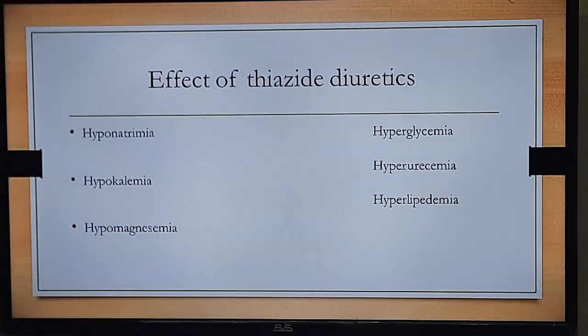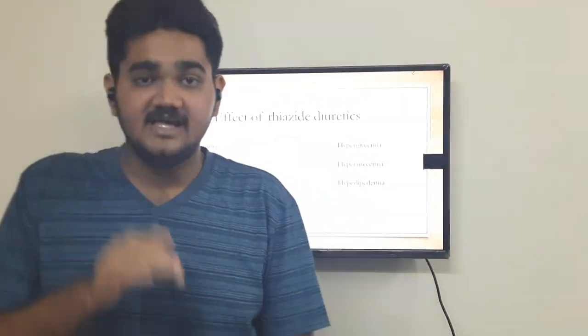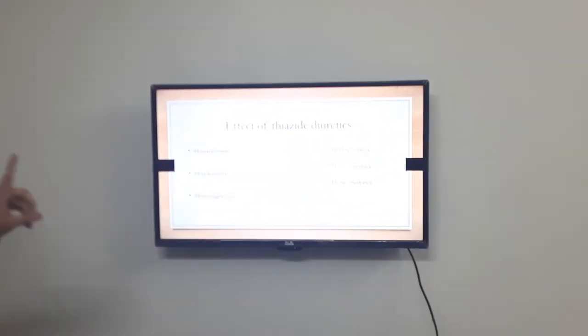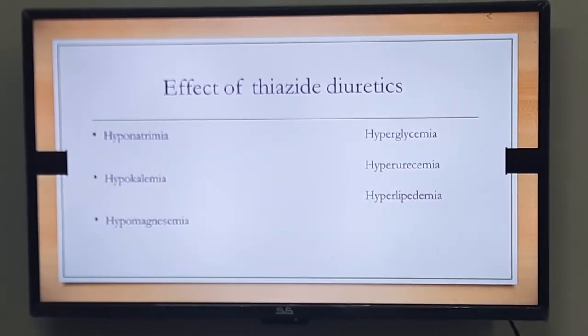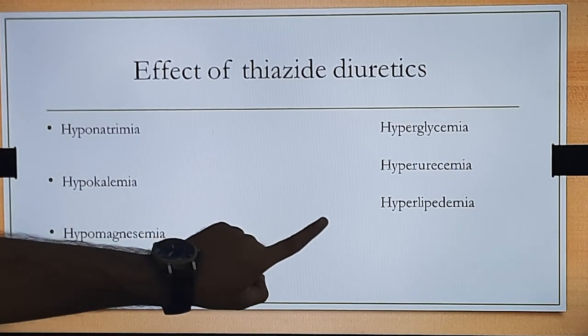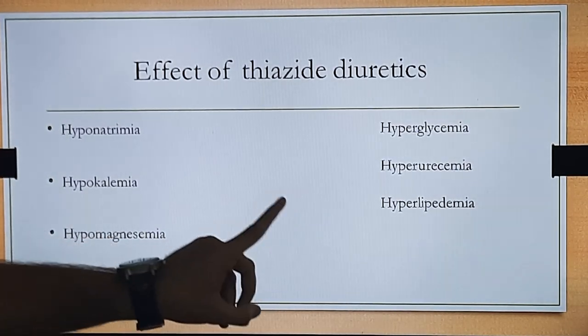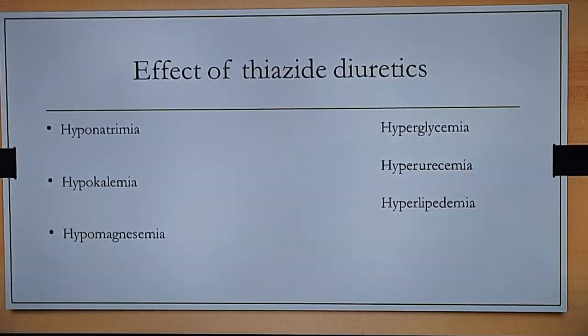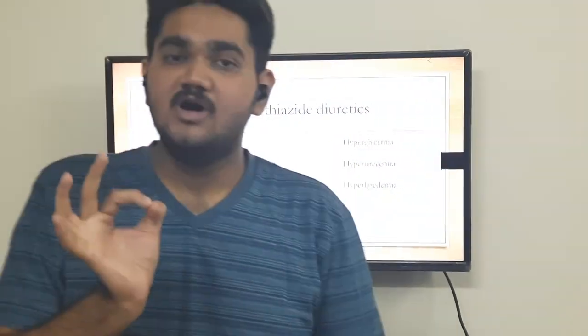Metabolic adverse effects include hyperglycemia due to less insulin production. There is also hyperuricemia because thiazide reduces uric acid excretion, so uric acid accumulates in the body. Additionally, thiazide increases triglyceride and LDL levels, causing hyperlipidemia.